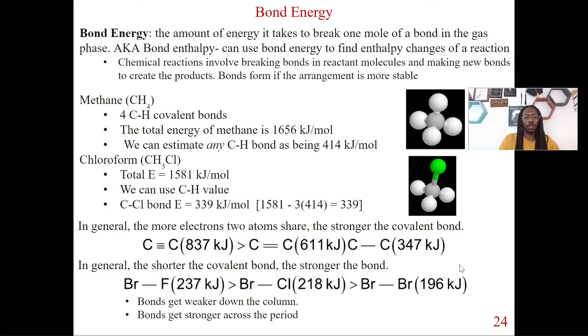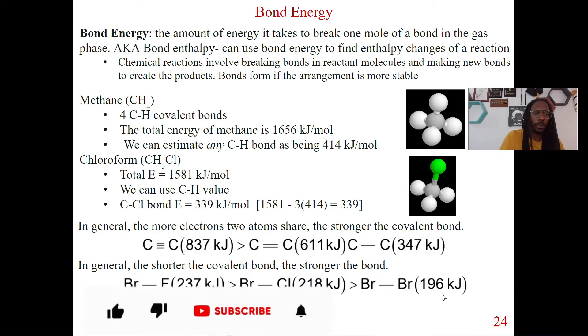Okay, so the shorter the covalent bond, the stronger the bond. So once again, going back, if we look at bromine-fluorine, 237, bromine-chlorine, 218, bromine-bromine, 196. So once again, we think about bond length, bromine-bromine has the longest bond length. Because it has the longest bond length, it's going to be the weakest bond. Okay, that's it.